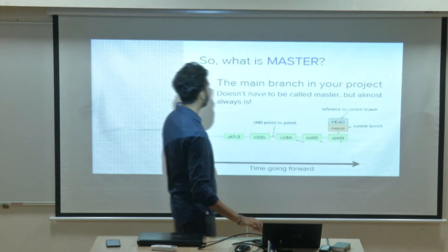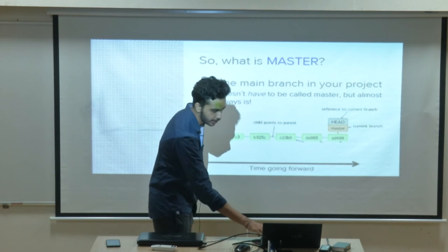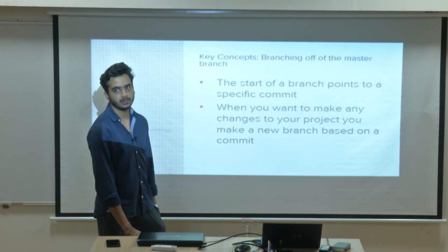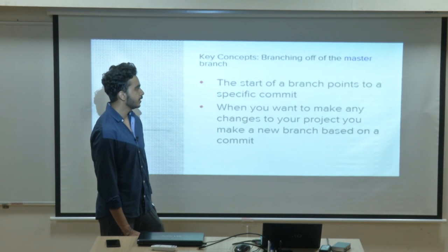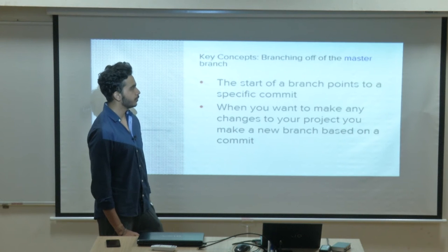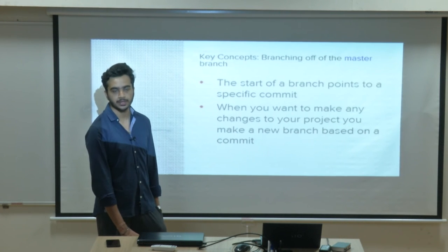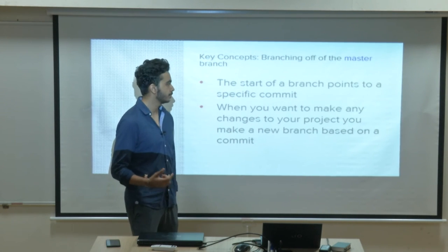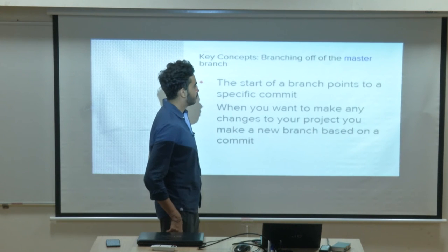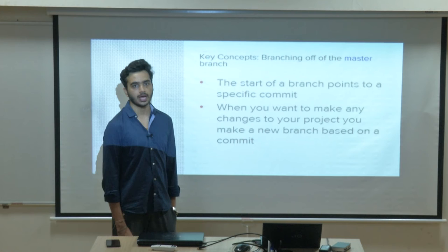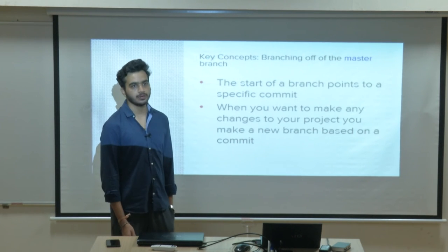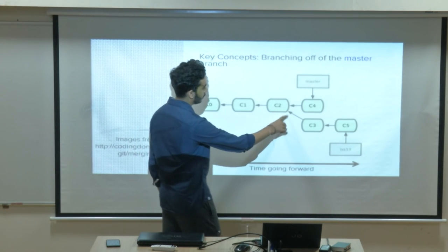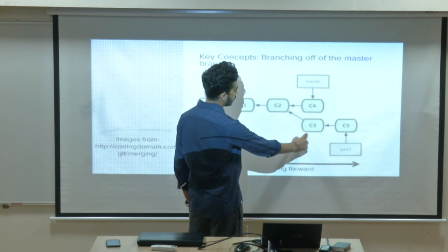The main branch is called master but this is just a convention — you can name it anything. If you want to add new features, you create a new feature branch, code all the changes you want to incorporate, and then there is something called a pull request. You create a pull request from your feature branch; if the code gets verified and is working fine, your feature will be merged into the master branch through that pull request.